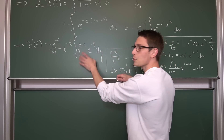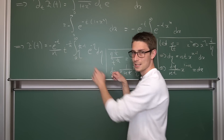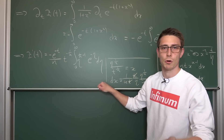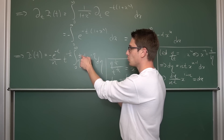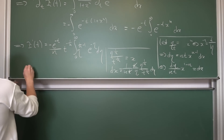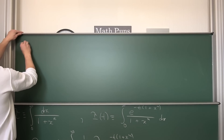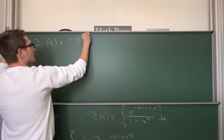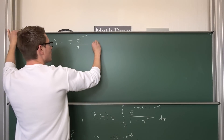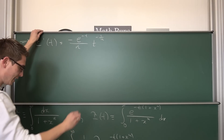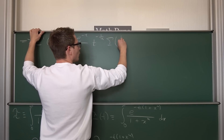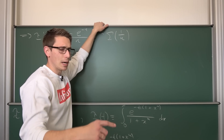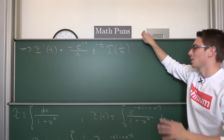You might be familiar with what we got right here: this is nothing other than the gamma function — link in the description if you don't know what the gamma function is. It's basically just a continuous equivalent of the factorial. This integral is the gamma function evaluated at 1 over n, giving us I prime with respect to t equal to negative e to the negative t over n, times t to the negative 1 over n, times gamma of 1 over n. Gamma of 1 over n is essentially 1 over n minus 1 factorial.